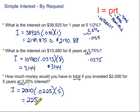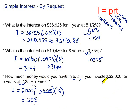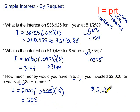So that's how much we're going to earn. How much money would we have in total? We add the amount earned in interest to our original investment. So $2,000 plus $225 gives us a total of $2,225. That would be our total.